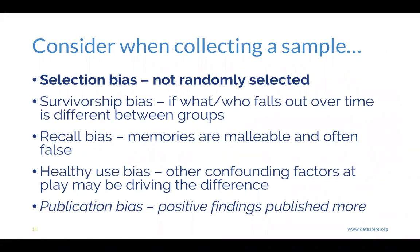There are a few things to consider when collecting your sample or thinking about data someone else has collected, because there are various ways that bias can get into our samples. Selection bias is the most fundamental and important one to think about first: Have the samples been randomly selected, or was there a reason why some were selected and some were not? Sometimes we can't do random sampling, and that is fine, but you need to know why samples were included and how those decisions were made about what was recorded and what was not. Publication bias isn't as much of a concern for us at the moment, but it's important to be aware of, especially as we start using data that other people have collected.